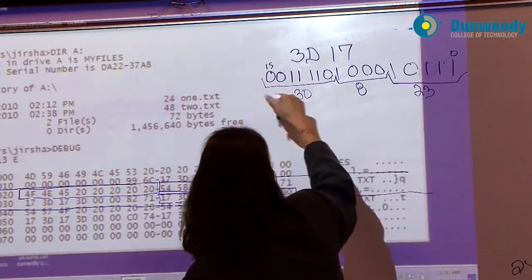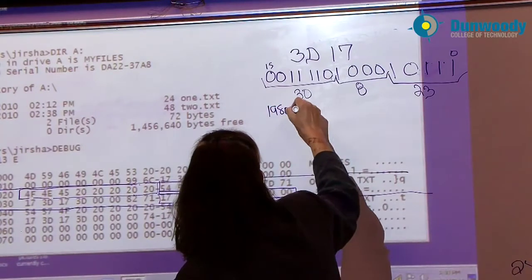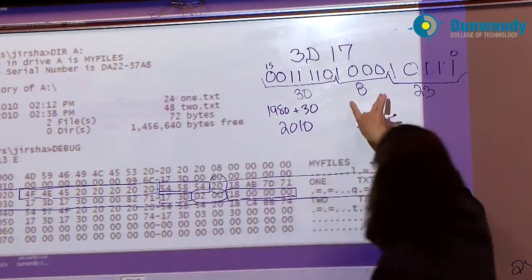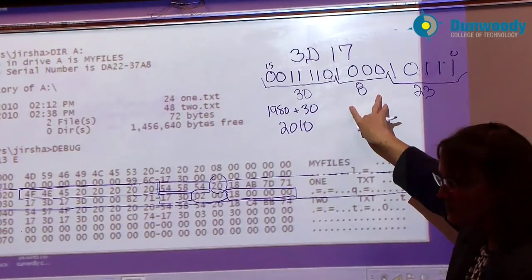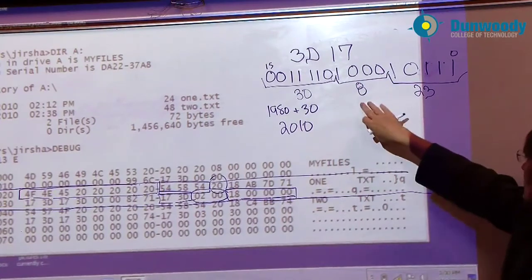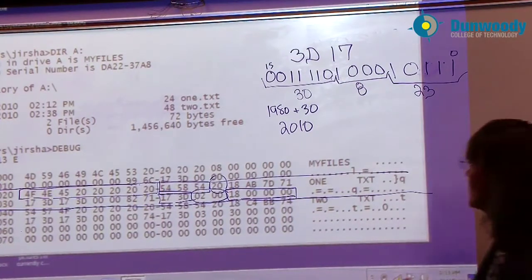So what is the year? 1980 plus 30? 2010. The 8th month is August. The 23rd day in August is when that file was created.